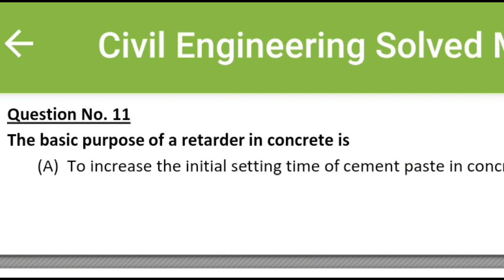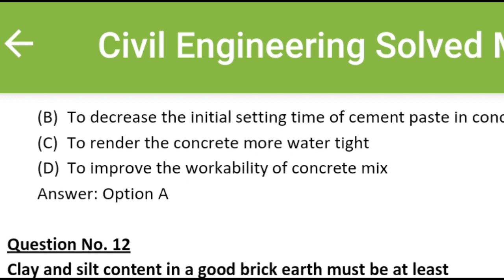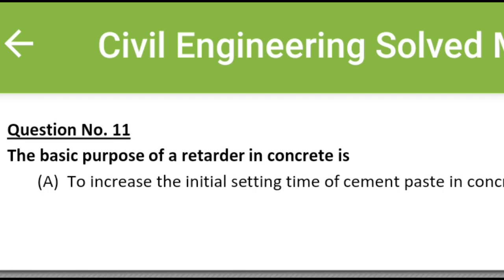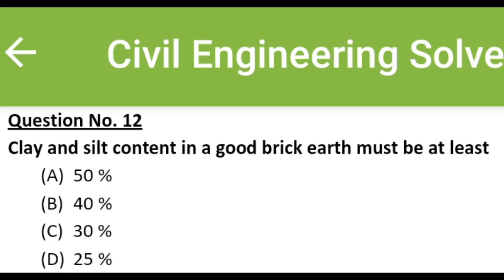The basic purpose of a retarder in concrete is: Option A: to increase the initial setting time of cement paste in concrete, Option B: to decrease the initial setting time of cement paste in concrete, Option C: to render the concrete more water tight, Option D: to improve the workability of concrete mix. The correct answer is Option A: to increase the initial setting time of cement paste in concrete.